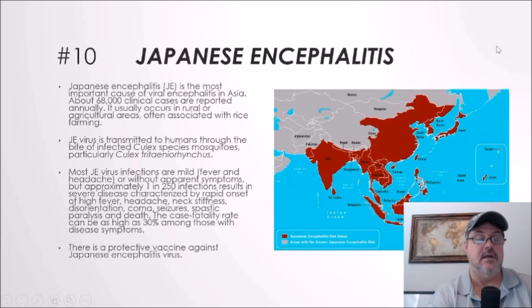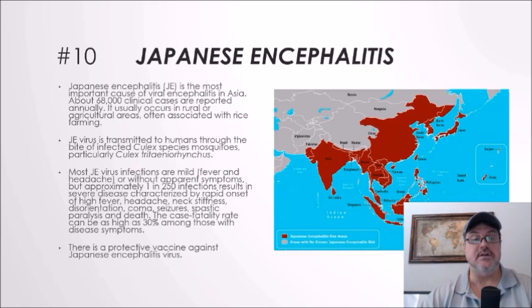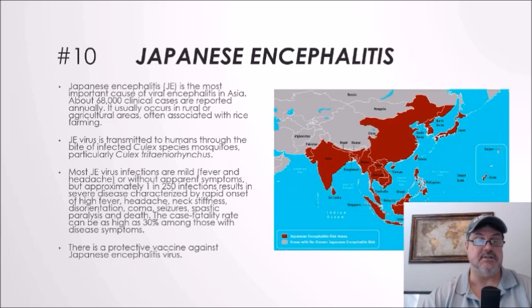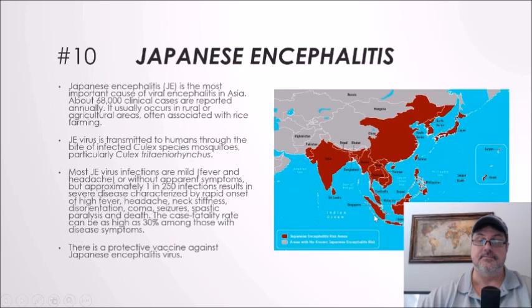Number ten: Japanese encephalitis. Japanese encephalitis is the most important cause of viral encephalitis in Asia, with about 68,000 clinical cases reported annually. It usually occurs in rural or agricultural areas, often associated with rice farming. The virus is transmitted through the bite of infected Culex species mosquitoes. Most infections are mild or without apparent symptoms. Approximately 1 in 250 infections results in severe disease — rapid onset of high fever, headache, neck stiffness, disorientation, coma, seizures, spastic paralysis, and death. The case fatality rate can be as high as 30%, but a protective vaccine is available.